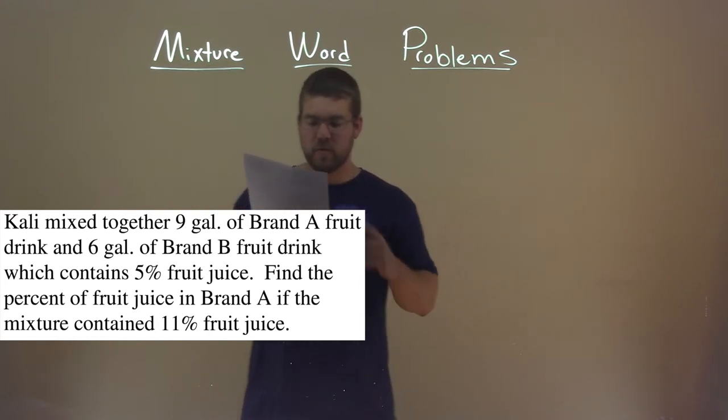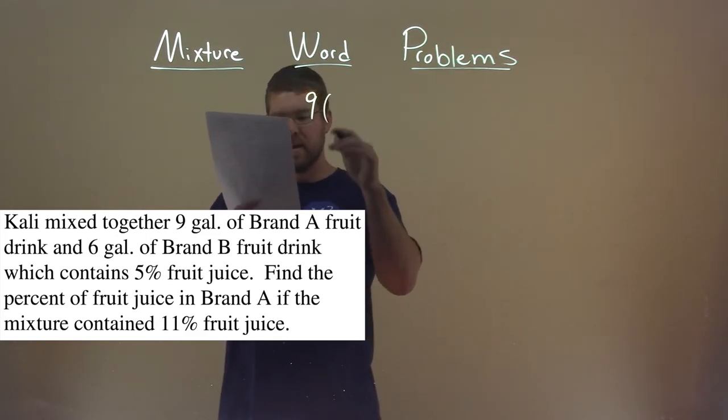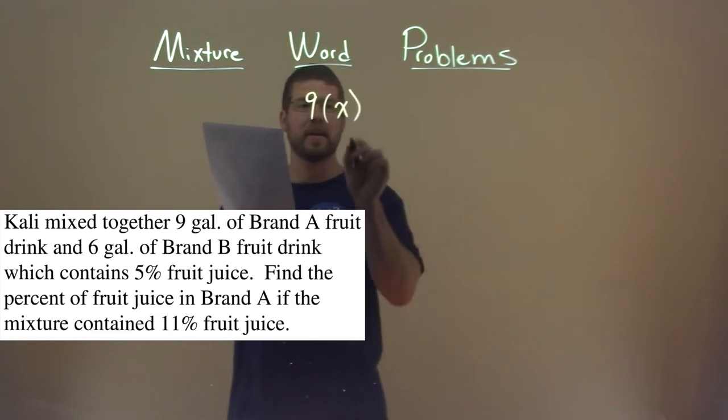Alright, so we have to start with Brand A. We have 9 gallons of Brand A, and we don't know Brand A's percent fruit juice mix. Call it X. We need to find that.